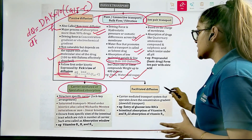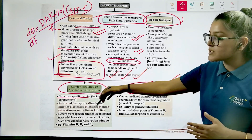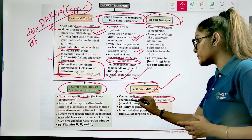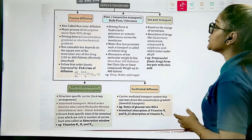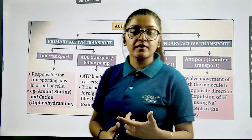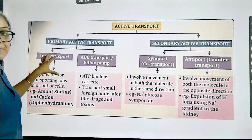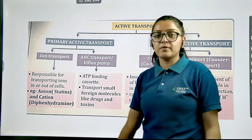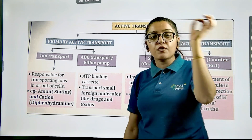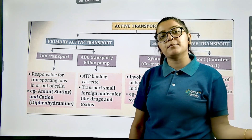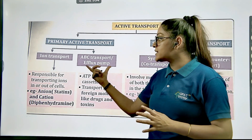In carrier-mediated transport, we also have facilitated diffusion, a subtype that operates along the concentration gradient — for example, entry of glucose into red blood cells. This is a passive transport process. For active transport, we have primary active and secondary active transport. In primary active transport, we have ion pair transporters where a counter ion facilitates entry, and also ABC transporters or efflux pumps, which treat the drug as a foreign material and expel it out of the cell back into systemic circulation.